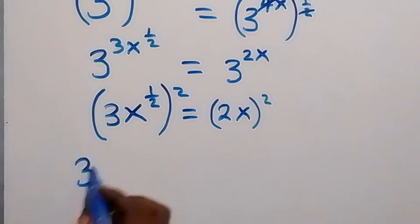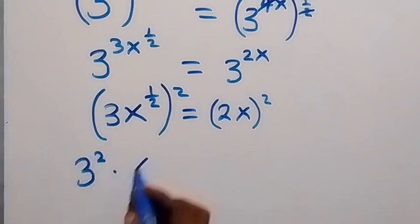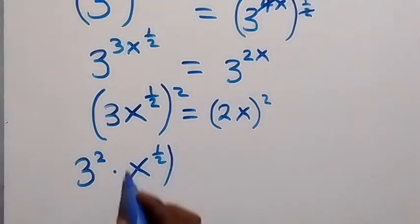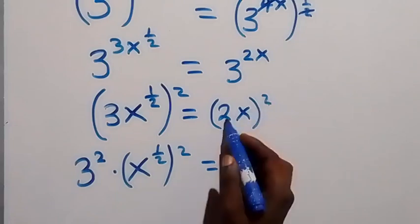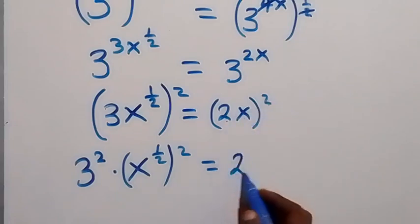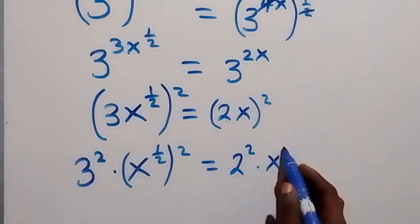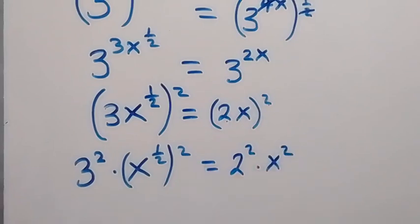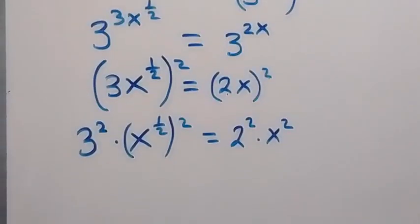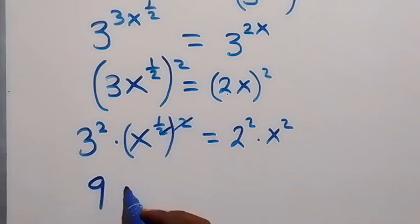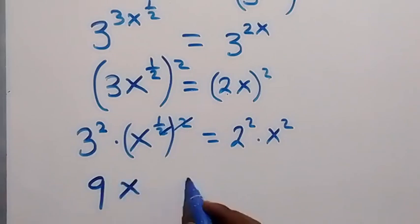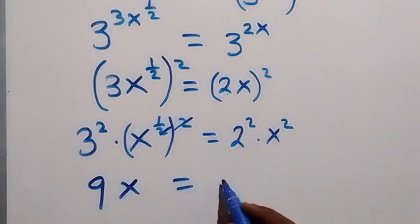Squaring the left side gives 3 squared times x raised to power half squared, and squaring the right side gives 2 squared times x squared. From here, 3 squared is 9, and the power of one-half squared cancels to give 9x. On the right, 2 squared is 4, giving 4x squared.